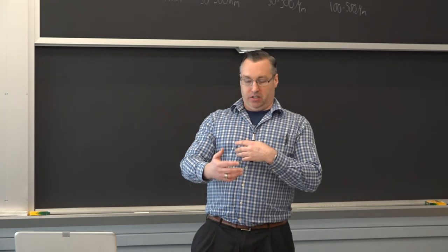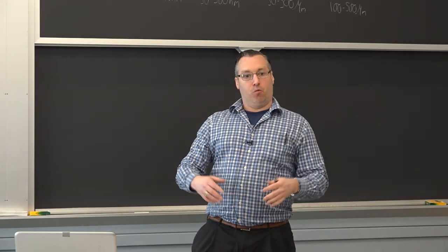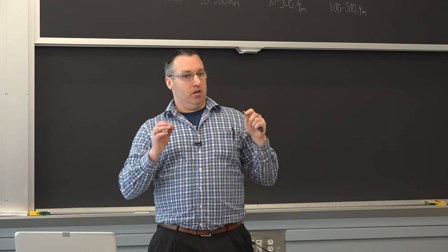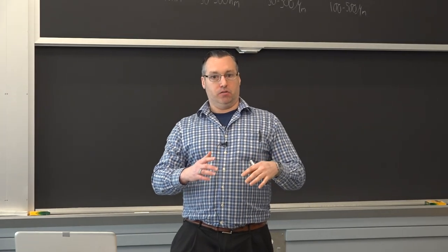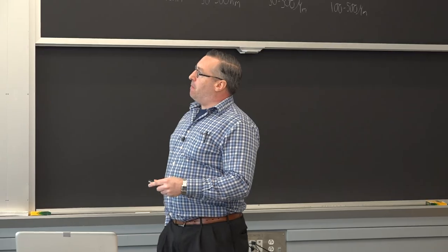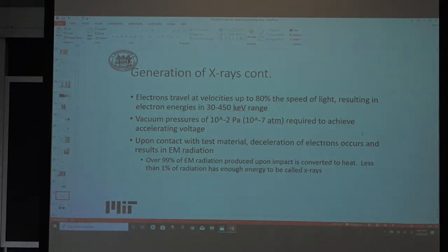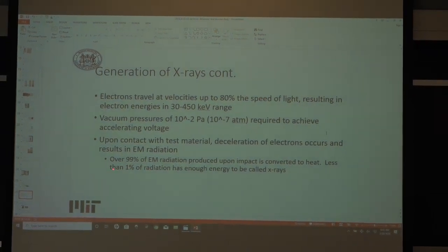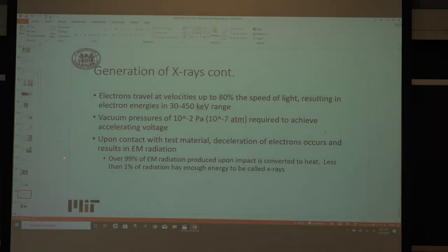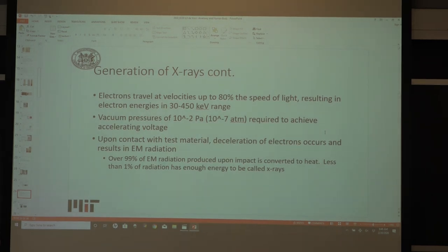For biological samples, you only need a couple of kV to penetrate. For a one- to two-inch-thick steel alloy, we're talking gigaelectron volts. Over 99% of the electromagnetic radiation is converted to heat, so less than 1% has enough energy to become an x-ray. That's why you need a water-cooled chamber — 99% is dissipated as heat.